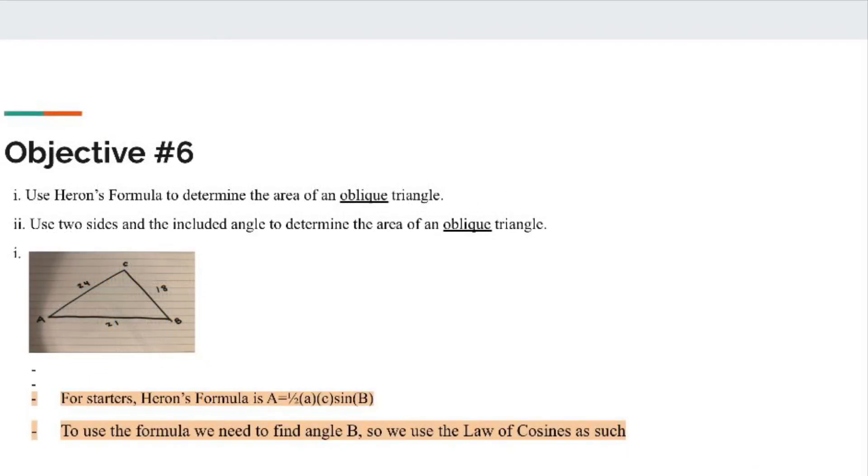Now we are on to objective number six, which asks us to use Heron's formula to determine the area of an oblique triangle, and then use two sides and the included angle of a triangle to determine the area of the oblique triangle.